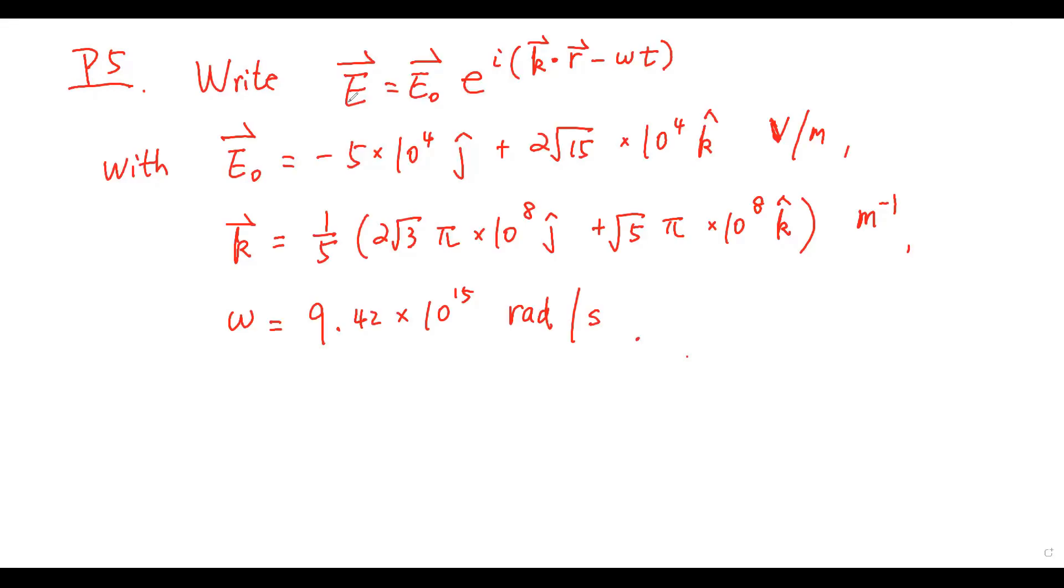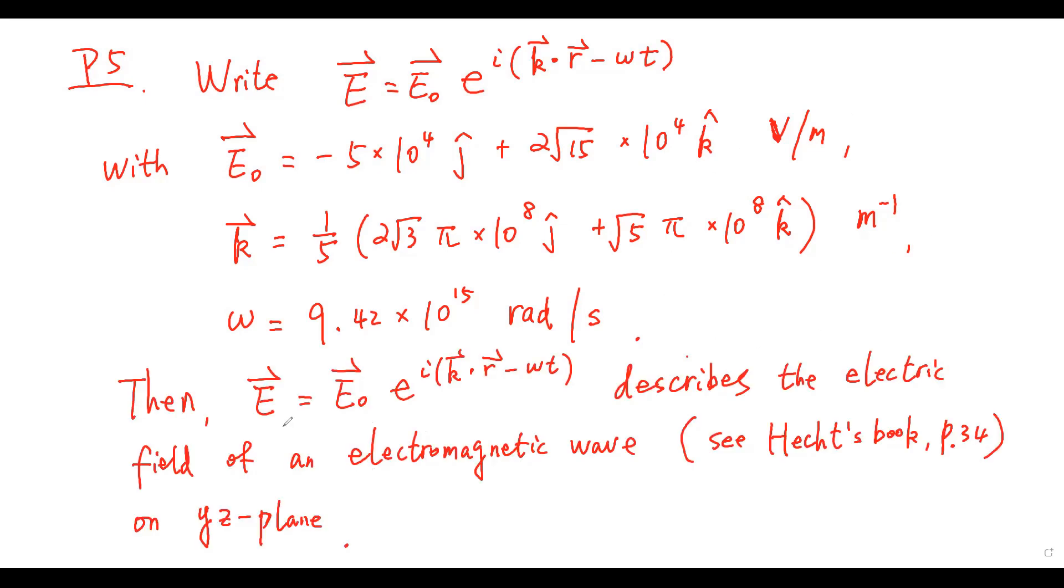Problem 5. Write E in this form with E0, K, omega equal to these values. Then E describes the electrical field of an electromagnetic wave on YZ plane. The direction along which the electrical field oscillates is given by this one, E0.